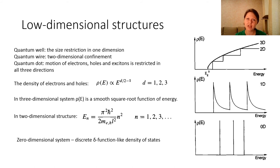When we have size restriction in one dimension, we come to a two-dimensional system which is called a quantum well. When we are dealing with two-dimensional confinement, we get a one-dimensional structure called a quantum wire. In the case when motion of electrons, holes, and excitons is restricted in all three directions, we are dealing with a quasi-zero-dimensional structure called a quantum dot.